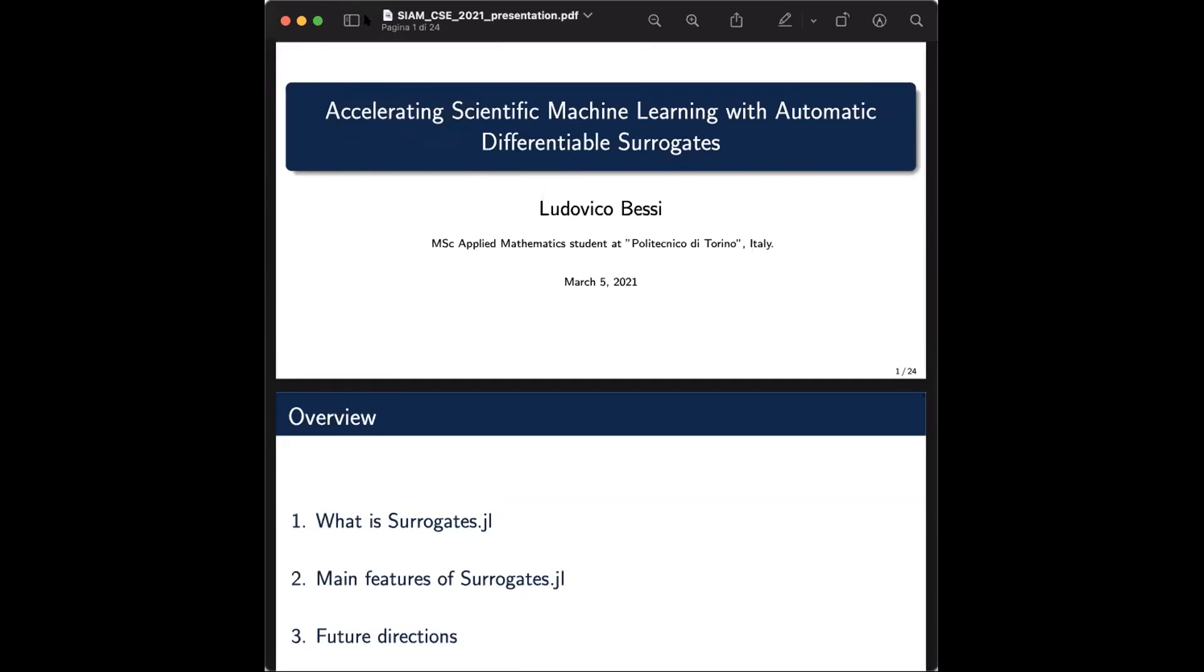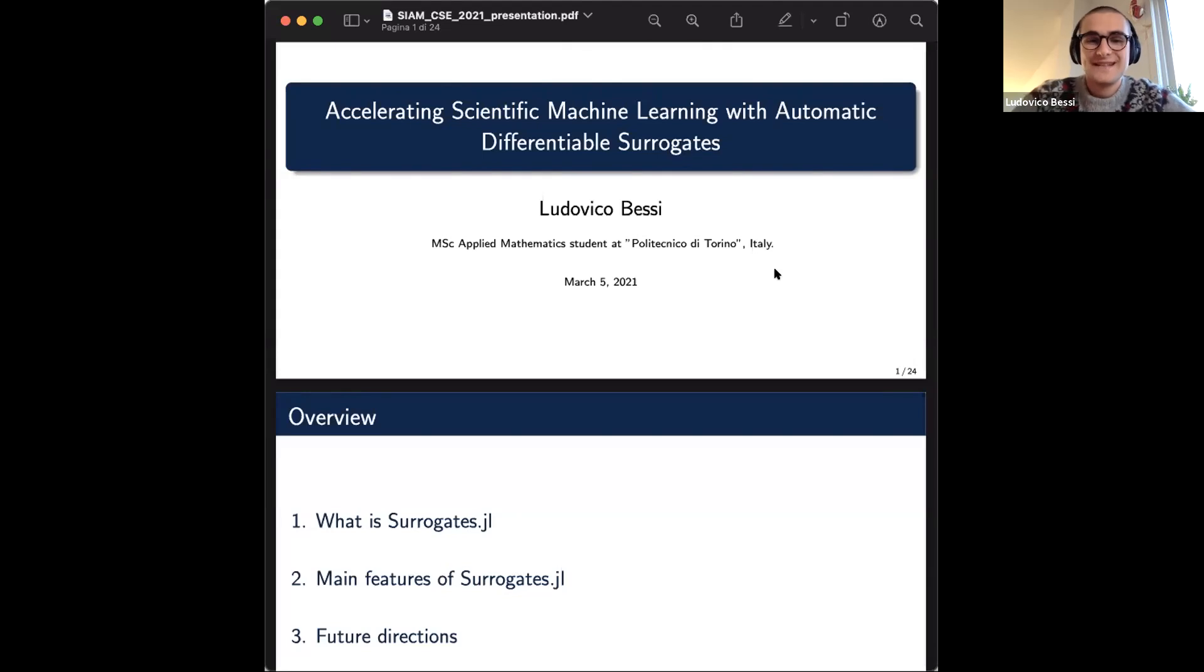So then moving on, we'll be moving to our next speaker here, which is going to be Ludovico Bessi, who has been with the CIML organization for about two years now. And he'll be discussing some of his recent work on accelerating scientific machine learning with automatic differentiable surrogates and the package that he's been building, which is surrogates.jl. Yes. Thanks, Chris.